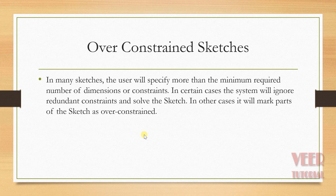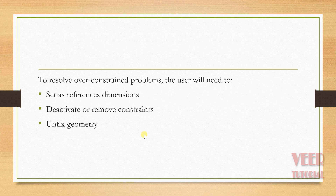Now the question arises: how can we solve the problem of over-constraint? There are some methods to resolve it. We can set the dimensions as a reference dimension, though generally it is not preferred. The second option — deactivate or remove the constraint, or unfix the geometry — is the most preferred option. Now we will go to the CATIA software and learn more about this concept of over-constraint.